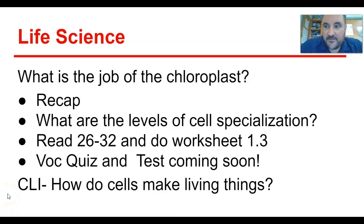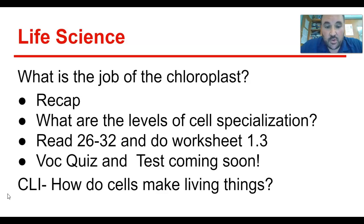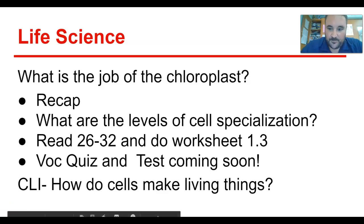Hi guys, Mr. Heskog's back trying to finish up chapter one. This is the third section of chapter one — we're going to talk about the levels of cell specialization. We just finished all of the stuff to do with cells and cell models. The warm-up question was about the job of the chloroplast: to make sugar using carbon dioxide, water, and sunlight. You'll have some homework, and there will be a vocabulary quiz and tests coming very soon. Let's get started.